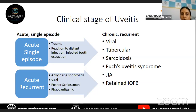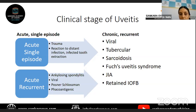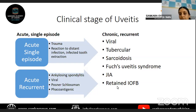An acute recurrent anterior uveitis is more commonly seen in patients with ankylosing spondylitis, viral infections, and the herpes virus group. Posner-Schlossman syndrome patients also have acute recurrent episodes of uveitis along with high eye pressures. Lens-induced uveitis can also occur if retained lens matter is not removed. Chronic uveitis is more likely in patients with viral causes, tuberculosis, sarcoidosis, Fuchs uveitis, and JIA. If an underlying foreign body is not removed, the patient will keep having a chronic and recurrent form of inflammation that responds to steroids but comes back each time.